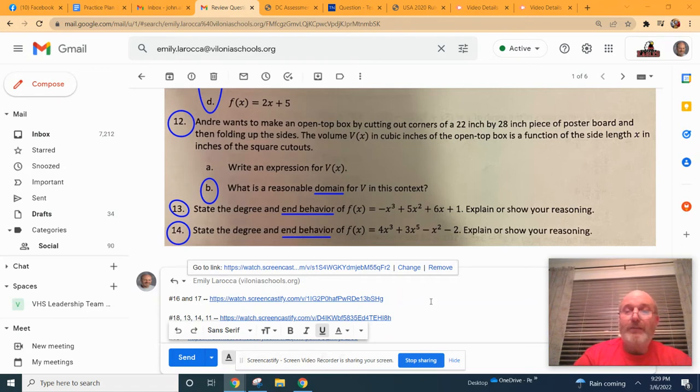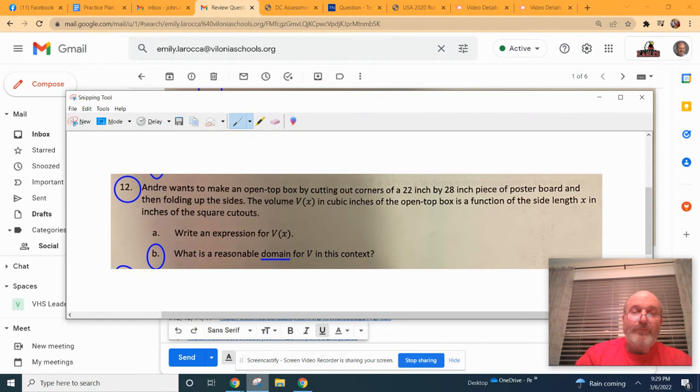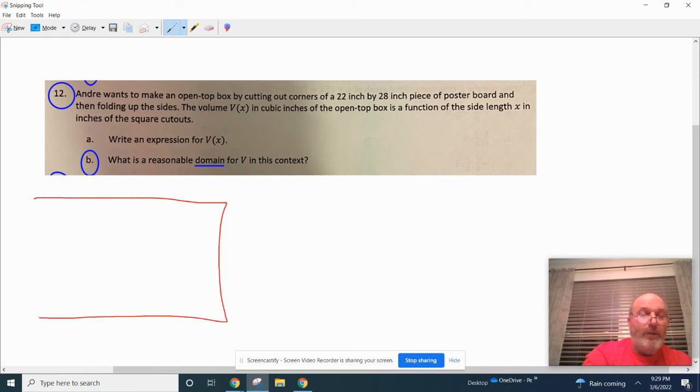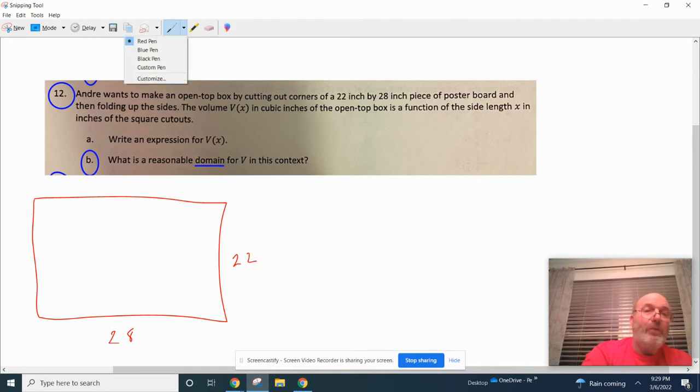So let's look at this and understand that if we take a 22 by 28 inch poster board and we cut out square corners, assuming since you didn't ask for part a that you knew how to do this.